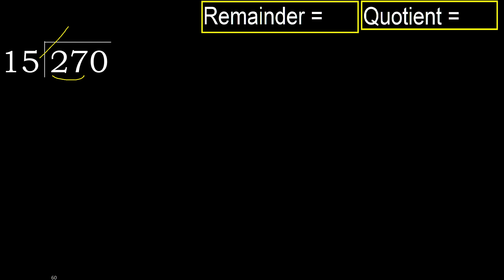15 multiplied by which number is nearest to 27 but not greater? 15 multiplied by 2 is 30, which is greater. Multiplied by 1, 15 is not greater. Ok.